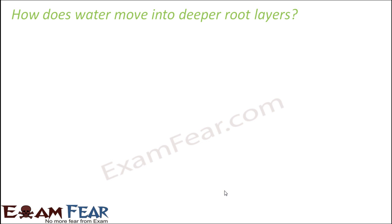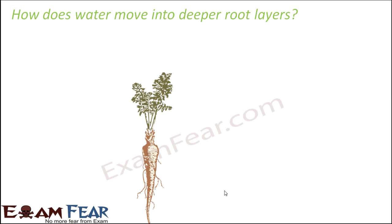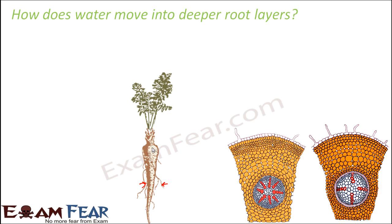So now the question is, we got to know that water entered inside the root hairs. But when you look at the cross section of a root, these are your root hairs. Water entered here by the process of diffusion. But now water has to enter even into the deeper layers of the root. Root hair is the outermost layer. So right now water is here, and from here it has to enter inside to the deeper layers of root. Then you have the ground tissue, then the endodermis, and then xylem and phloem. So water has to travel through all these — how water will enter into these deeper root layers is a challenge.